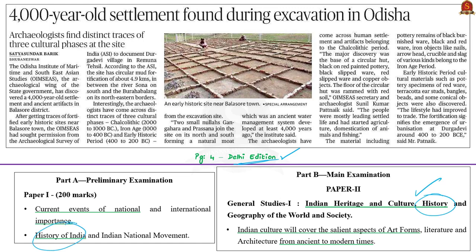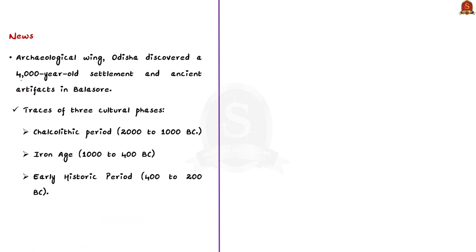This article says that the archaeological wing of the Odisha government has discovered a 4,000-year-old settlement and ancient artifacts in Balasore district of Odisha. Archaeologists have discovered distinct traces of three cultural phases: the Chalcolithic period ranging from 2000 to 1000 BC, the Iron Age from 1000 to 400 BC, and the early historic period from 400 to 200 BC.